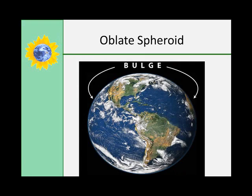But Earth is not a perfect sphere. It's an oblate spheroid. The Earth bulges slightly at the equator because of its spinning on its axis.